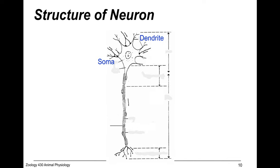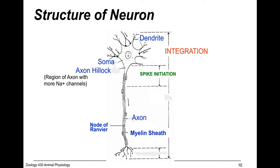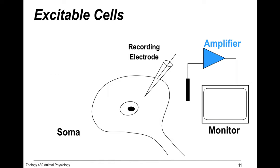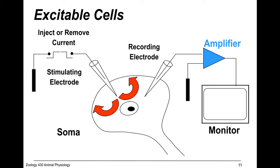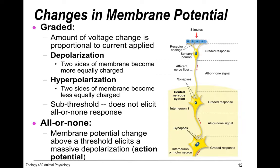To review: we have the soma, the dendrites, the axon, the nodes of Ranvier, the myelin sheath, integration, spike initiation at the axon hillock, signal conduction, and transmitter secretion. Now, how does signaling work? A stimulus starts to open gates in the membrane. Signals are initiated by changes in the membrane potential, and there are two types: graded potentials and action potentials.